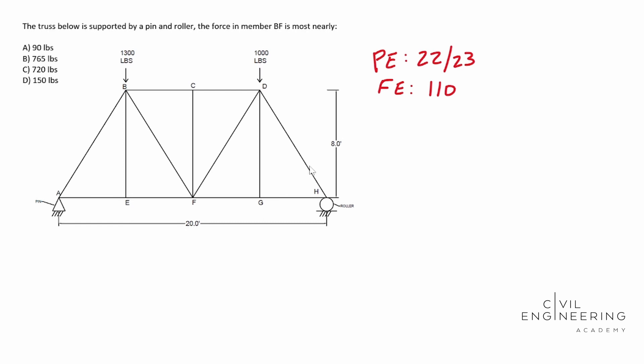The first step is solve for the reactions. And so we have a pin on this left side, it says pin right there. But even if it doesn't include that wordage there, we can identify it by this triangle. And then we see a roller over here on the other side is going to be a circle with a platform underneath it. If you remember from class, a pin will have a Y component, so we're going to call this aY, and then it also has an X component, aX. And then a roller, well, it's only constrained in the Y, so it's going to have a reaction force in the Y direction. And so that's HY.